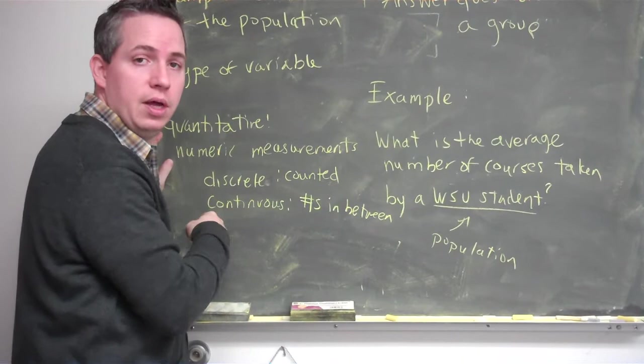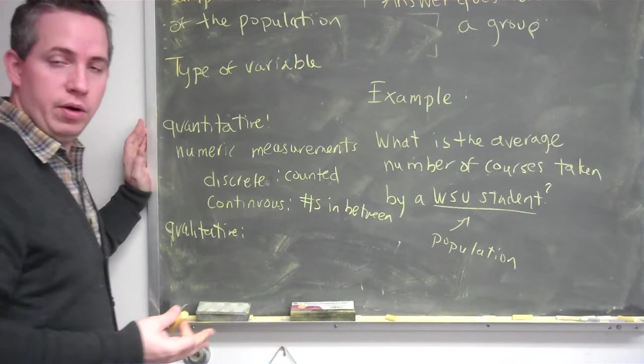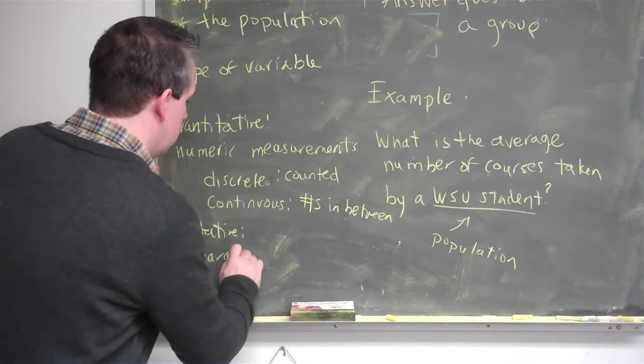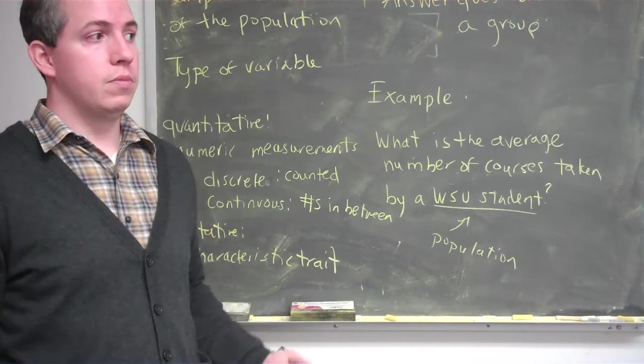Besides quantitative variables, there's also qualitative. Qualitative data is not numeric — it is more of some type of characteristic trait. What color is your hair? What color are your eyes? What color is your shirt? Is the day sunny or not sunny? Things like that — there's some type of characteristic.